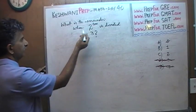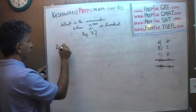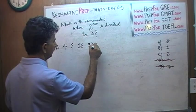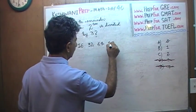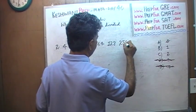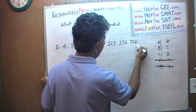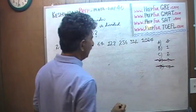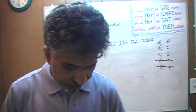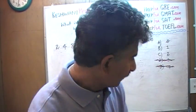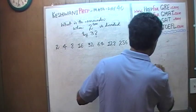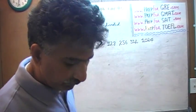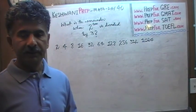You get the idea. 2 raised to 1 is 2, 2 raised to 2 is 4, then 8, 16, 32, 64, 128, 256, 512, and if you double 512: 500 times 2 is 1000, and 12 times 2 is 24 — so 1024. Now ask yourself: what will you get if you divide these numbers by 3? There is a pattern here that we want to discover.